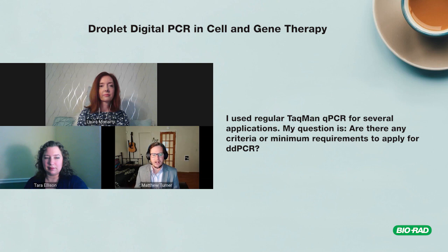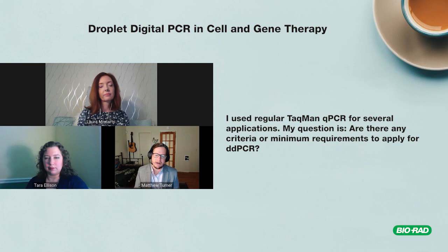Bio-Rad's platform is an open platform: you can order TaqMan probes from any vendor as long as it has a FAM, HEX, or VIC fluorescent probe. The only requirement is to change out the supermix — the Bio-Rad supermix for ddPCR is required because it's needed to make the droplet emulsions. Otherwise, any assay you've developed can be moved over with quite similar design considerations.